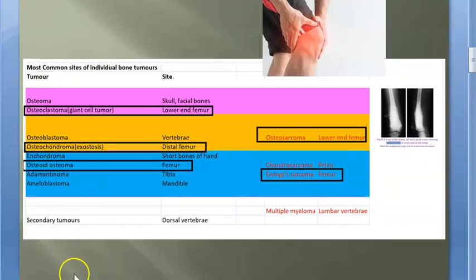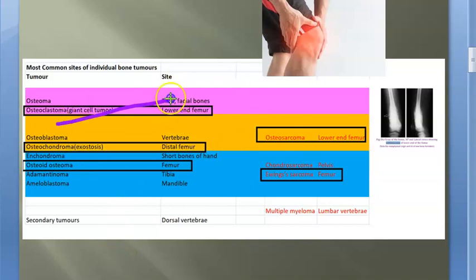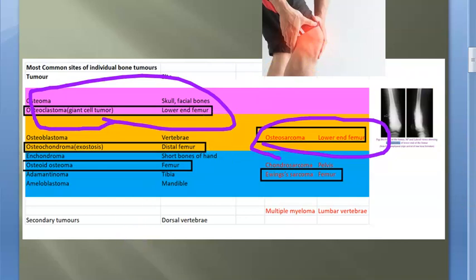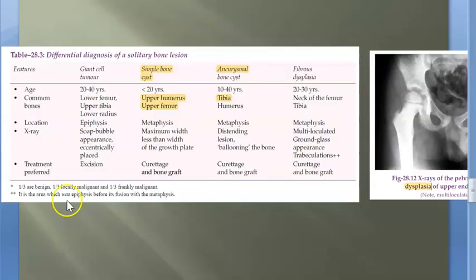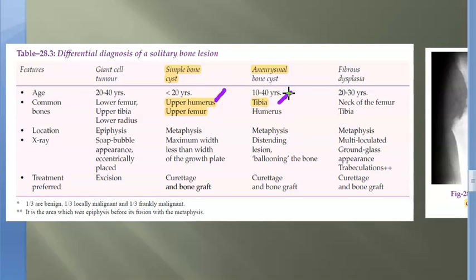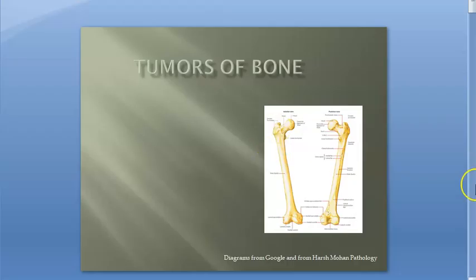Now let's look at common sites. The important tumors for the exam — giant cell tumor, osteosarcoma, Ewing's sarcoma, osteoid osteoma, osteochondroma — all affect the femur. Osteosarcoma affects the lower end of femur; giant cell tumor (osteoclastoma) also affects the lower end of femur. For cysts: simple bone cyst affects the upper humerus, and aneurysmal bone cyst affects the tibia.